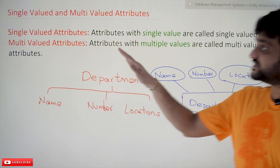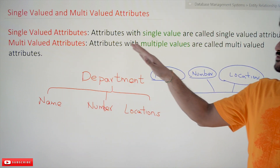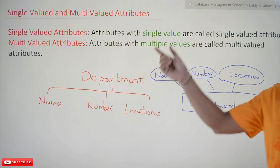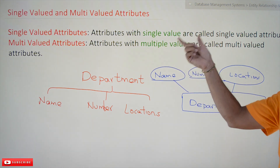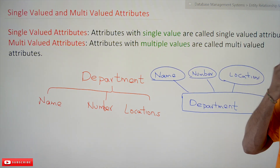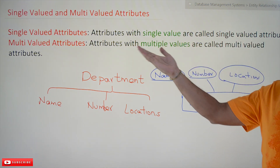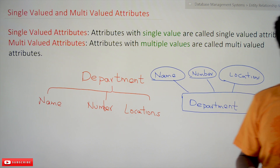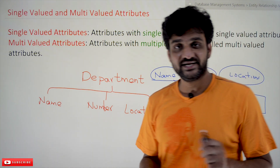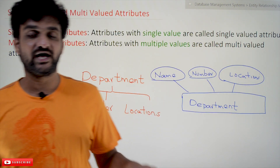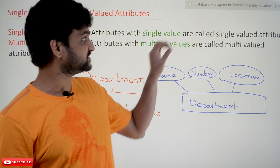Now coming to this class: what is a single valued attribute and what is a multi valued attribute? Attributes with single values are called single valued attributes, and similarly, attributes with multiple values are called multi valued attributes.